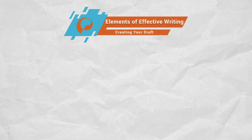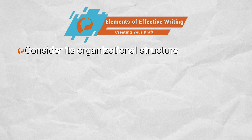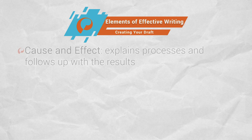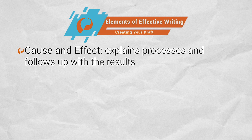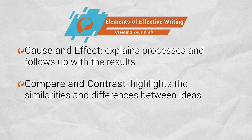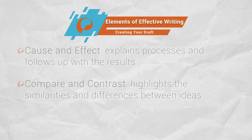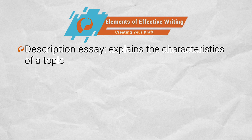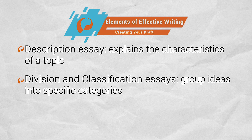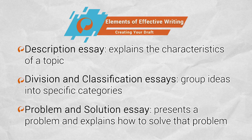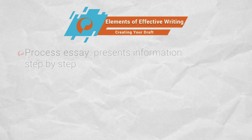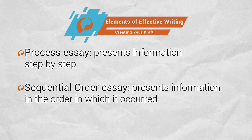Before you start drafting your essay, you should consider its organizational structure. There are a number of ways to organize an essay. Cause and effect organization explains processes and follows up with the results of those processes. Compare and contrast highlights the similarities and differences between ideas. A description essay explains the characteristics of a topic. Division and classification essays group specific ideas into specific categories. A problem and solution essay presents a problem and explains how to solve that problem. A process essay presents information step-by-step. A sequential order essay presents information in the order in which it occurred.